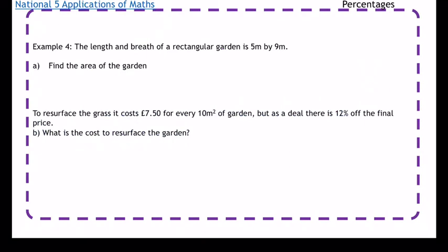Example 4: The length and breadth of a rectangular garden is 5 meters by 9 meters. Find the area of the garden. This is quite a typical applications question broken down into a couple of parts. The area equals length times breadth, so 5 times 9, which is 45 meters squared.